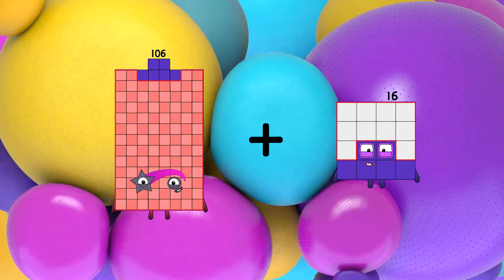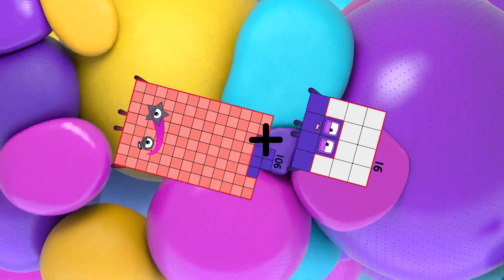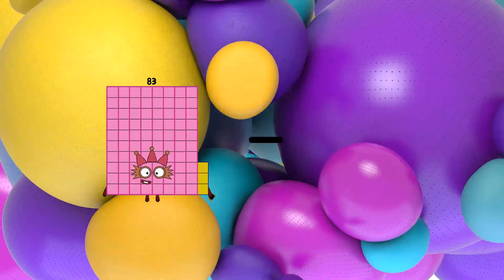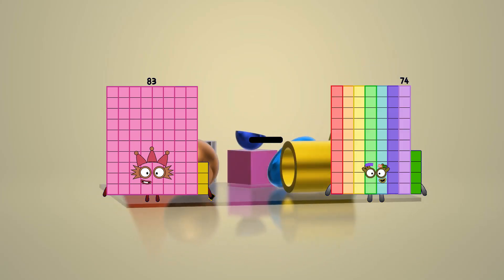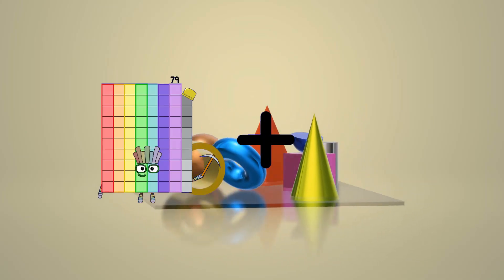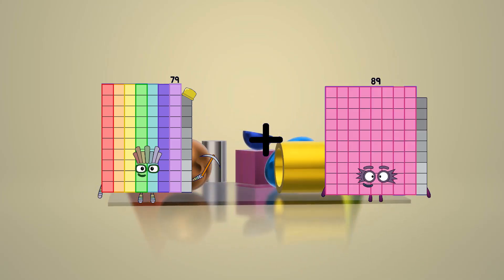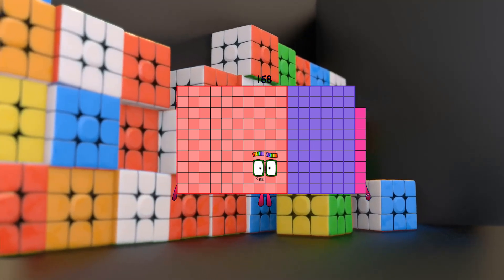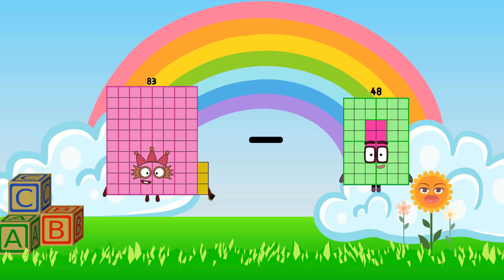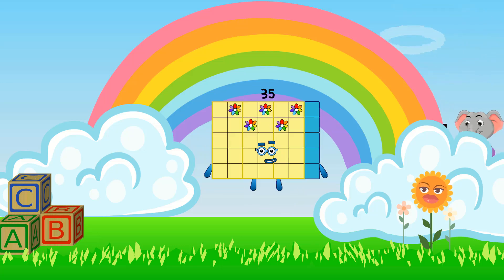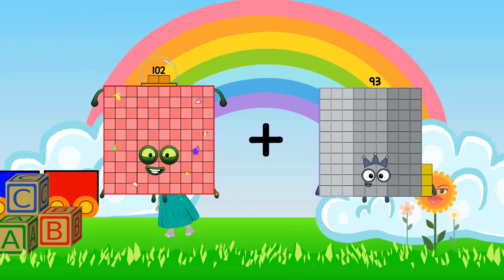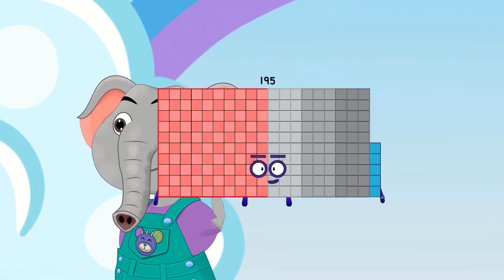106 plus 16 equals 122, 83 minus 74 equals 9, 79 plus 89 equals 168, 83 minus 48 equals 35, 102 plus 93 equals 195.